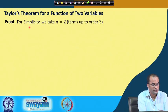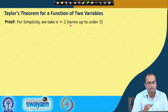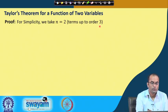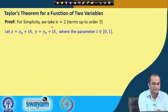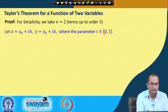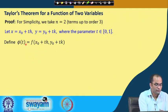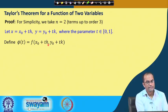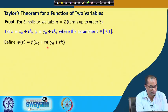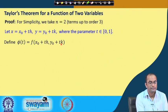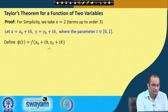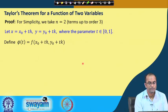We will go through the proof of this result. For simplicity we take n=2, meaning we consider terms up to order 3. We set x = x₀+th and y = y₀+tk, where t is a parameter in [0,1]. We define a new function φ(t) = f(x₀+th, y₀+tk), where x₀, y₀, h, and k are fixed and t varies in [0,1]. This makes φ a function of one variable.